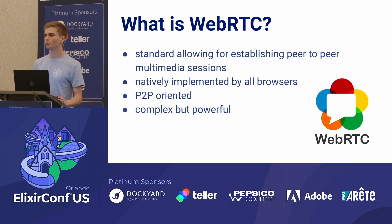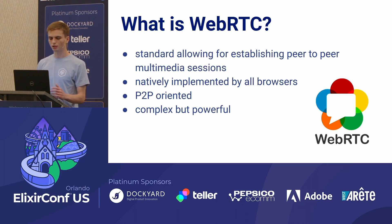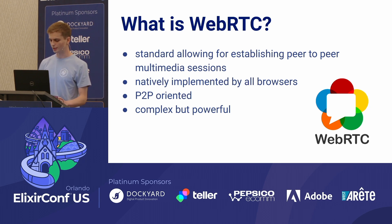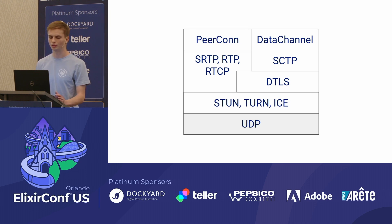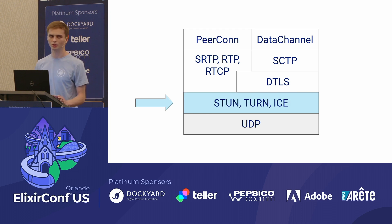On one hand we have a pretty high-level API for adding, removing, or in general managing tracks. But on the other hand we have a pretty low-level API where the WebRTC developer has to, for example, provide their own signaling server. This diagram shows the WebRTC protocol stack — we have over 10 different protocols that we have to implement to fully support WebRTC. Everything above UDP are protocols we need to implement, and today we're going to talk about STUN, TURN, and ICE.